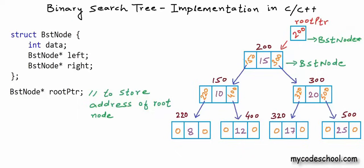Quite often we like to name this root pointer just 'root'. We can do so but we must not confuse — this is a pointer to root and not the root itself. To create a BST we first need to declare this pointer. Initially we can set this pointer as null to say that the tree is empty. A tree with no node can be called an empty tree, and for an empty tree the root pointer should be set as null. We can do this declaration in the main function.